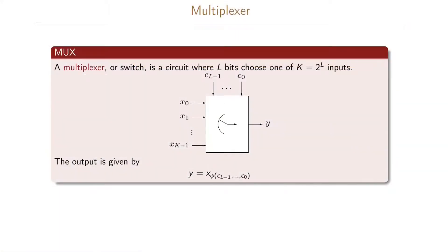A multiplexer can be seen as a switch where we can choose which one of the inputs we're going to use for the outputs. It's a circuit where we have L bits that will choose one of k equals 2 to the L inputs.